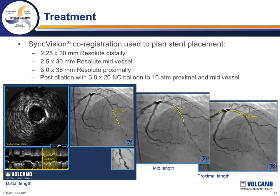For treatment of the LAD, we used our IVUS data with SyncVision to plan stent placement. Knowing the distal vessel was over 2 mm and the proximal vessel was 3 mm, we used SyncVision to plan where each stent would land. Since the longest 2.25 mm stent available was 30 mm, we used SyncVision to plan where the proximal portion of that stent would land, then measured the length necessary to cover the LAD from the ostium to where the proximal portion of the distal stent would land. We decided to use the longest 3 mm stent to cover the proximal LAD from the ostium distally, with a 30 mm stent providing a small degree of overlap to cover the entire vessel.